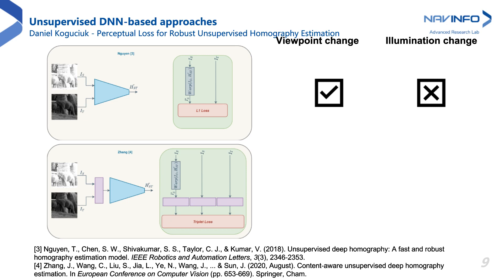In contrast, Zeng, by learning the feature representation used for both homography estimation and image comparison, achieved robustness to different lighting conditions, but not for images with big viewpoint changes. Therefore, robust unsupervised homography estimation for both big illumination and viewpoint changes at the same time is still an open problem.